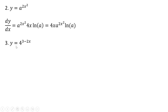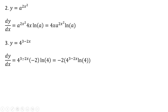Example three: y equals 4 raised to the 3 minus 2x power. The derivative — we have the original function multiplied by the derivative of the exponent, 3 minus 2x. The derivative of that is minus 2. And then we take the natural log of 4. And just rewriting.